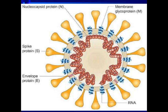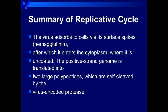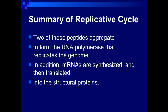Summary of the replicating cycle. The virus adsorbs to cells via its surface spike hemagglutinin, after which it enters the cytoplasm where it is uncoated. The positive-stranded genome is translated into two large polypeptides, which are self-cleaved by virus-encoded proteases. Two of these peptides aggregate to form the RNA polymerase that replicates the genome.